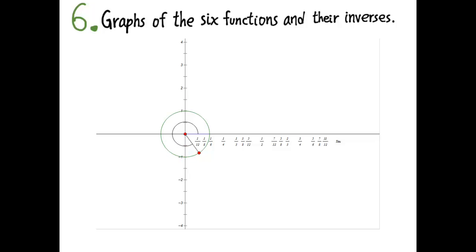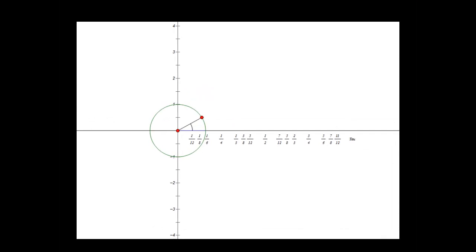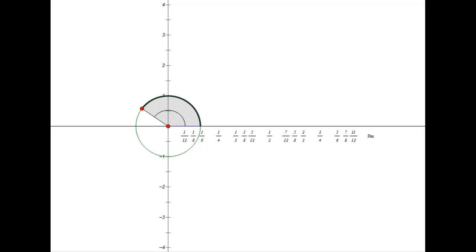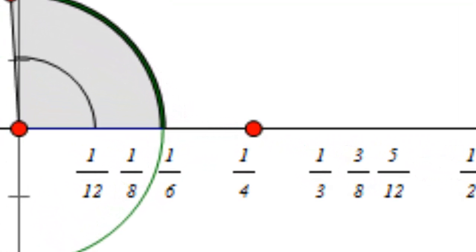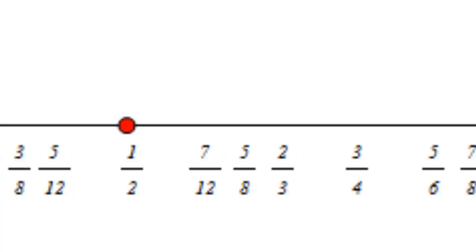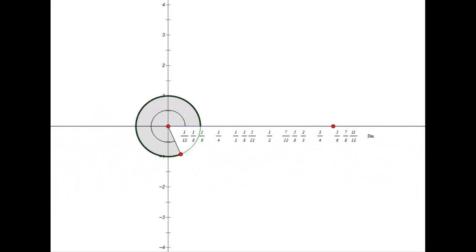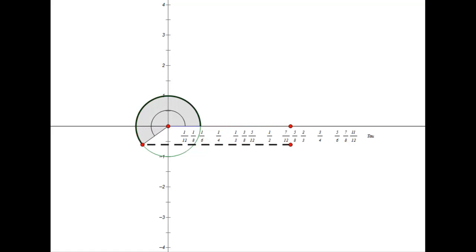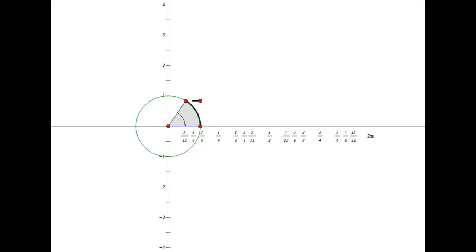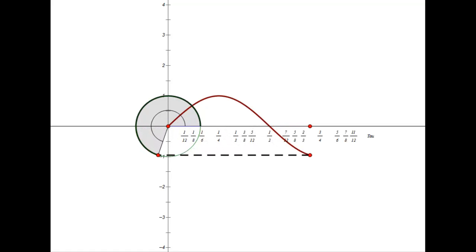A point moves around the unit circle, defining an angle indicated by the shaded sector and arc length. That arc length is plotted on the x-axis in units of tau — at half tau we're halfway around, and at tau we've gone all the way around. The y-coordinate of the point on the circle is the definition of the sine function, so plotting the y-coordinate traces out the sine function curve.